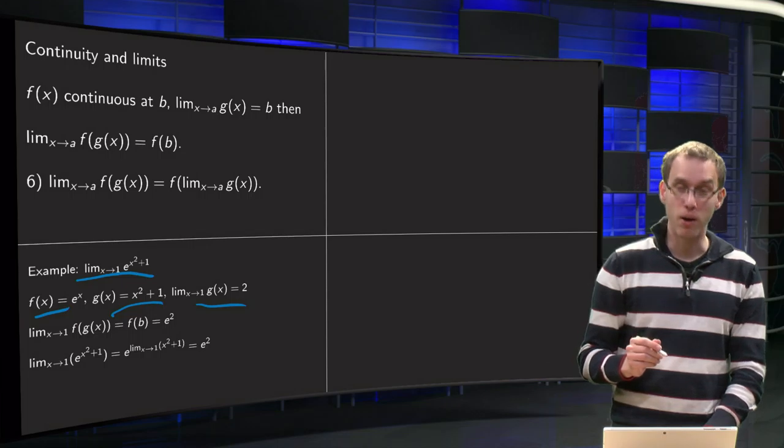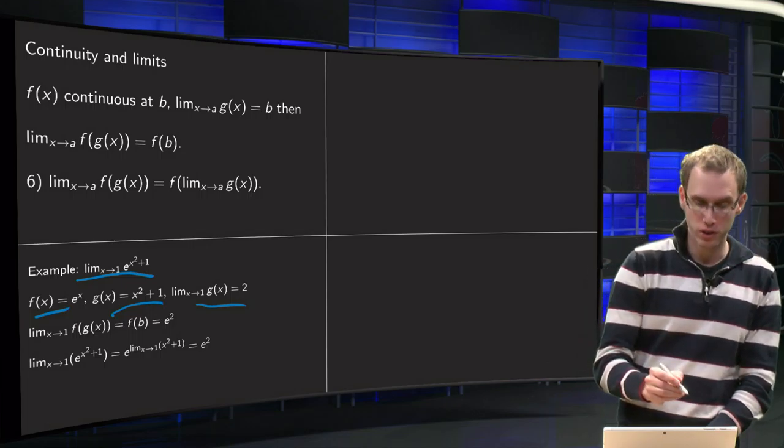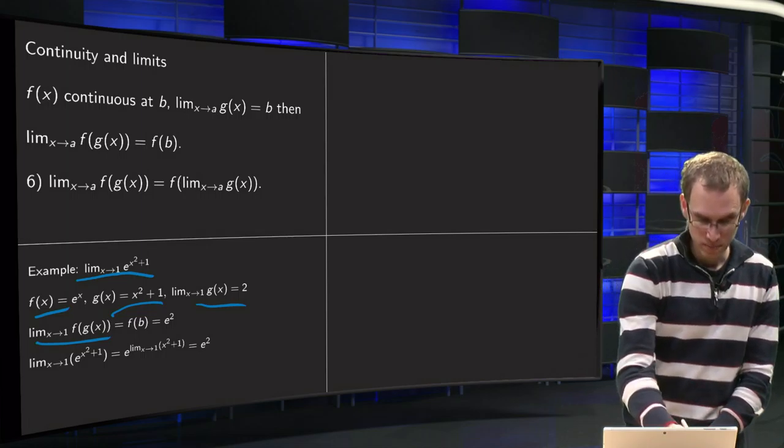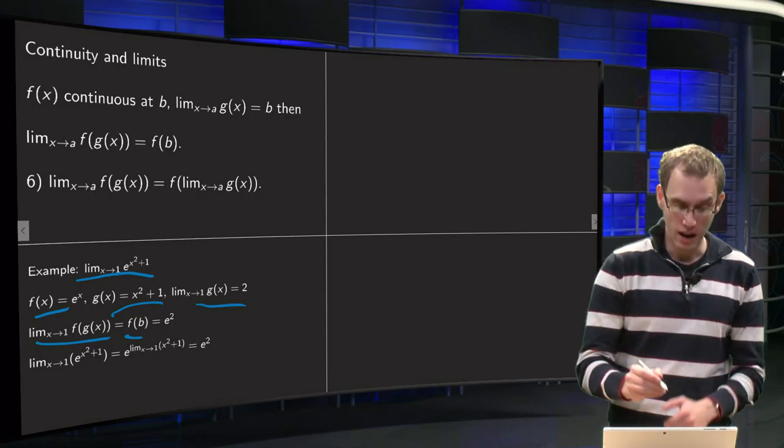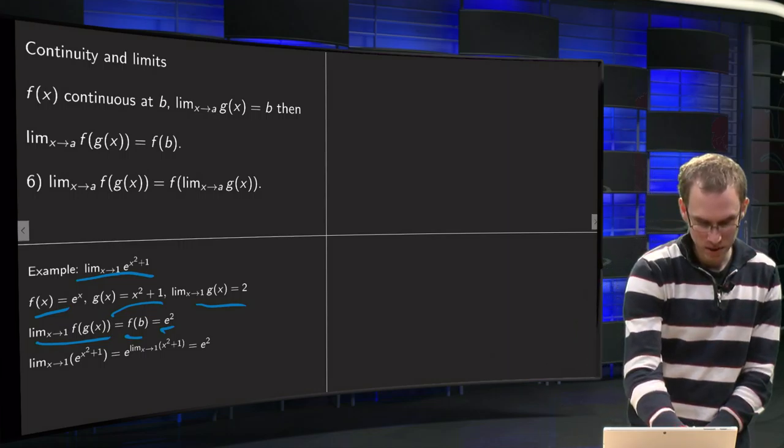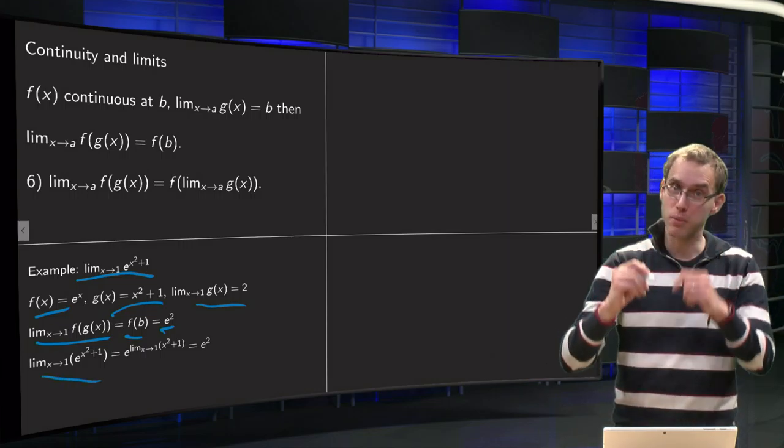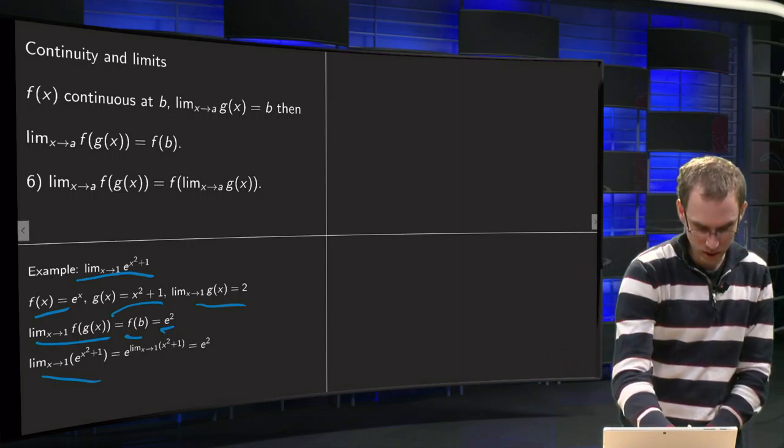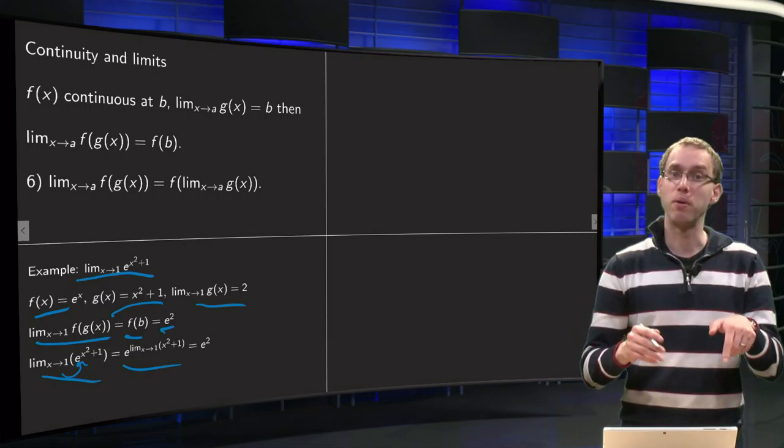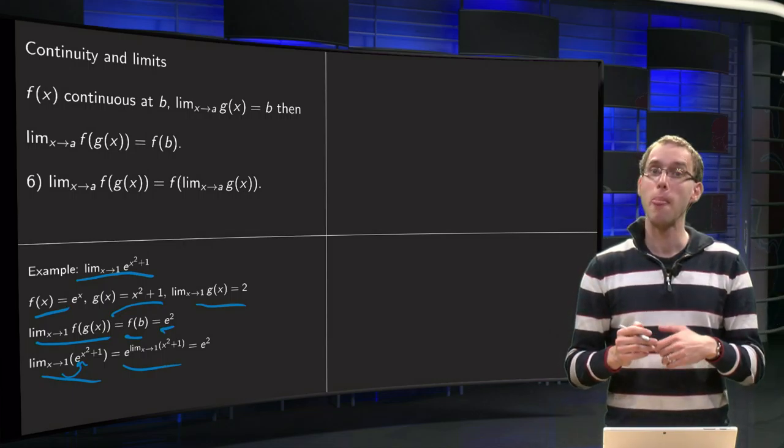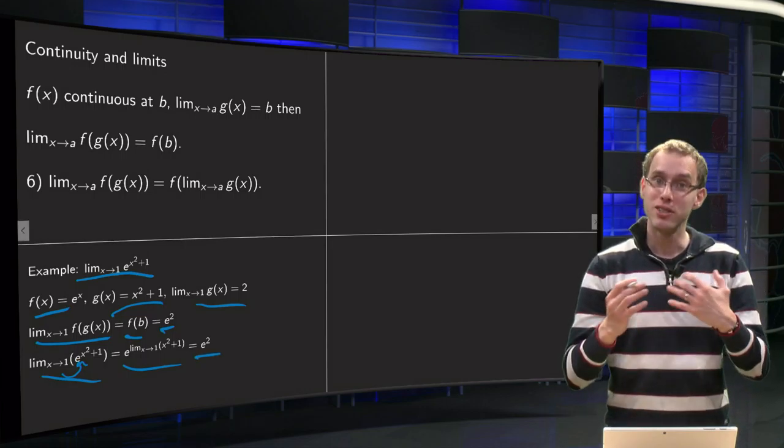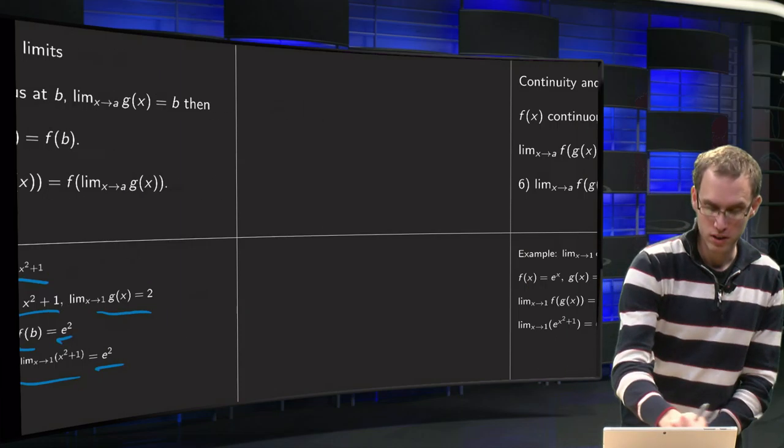Then we can apply our 6th rule about continuous functions: limit x to 1 of f(g(x)) equals f(b), and b equals 2, so we get e squared. Or as you would usually write it, limit x to 1 of e to the power x squared plus 1, you take the limit inside the continuous function, so you take the limit up there at the exponential. E to the power limit x to 1 of x squared plus 1, and that one is standard, and you get e squared as your limit. So that is how you use this 6th rule.